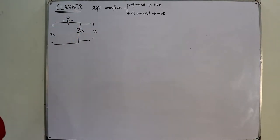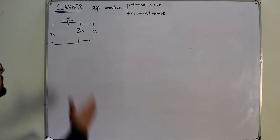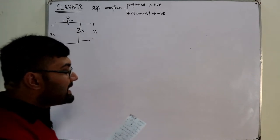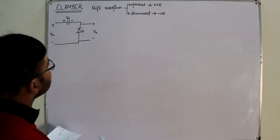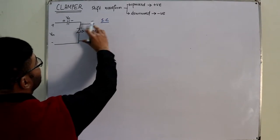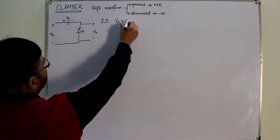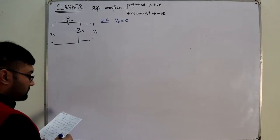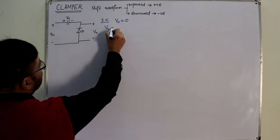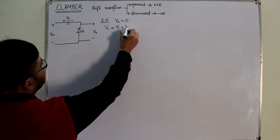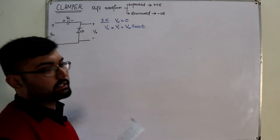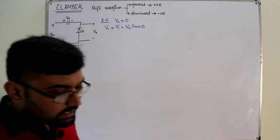Applying the short circuit test — you short the diode, find the current through it, and find the required parameters. So with the diode shorted, the output voltage is zero. First of all, the output voltage is zero. VC is directly equal to V input, which is a sinusoid: Vm sin(ωt). A sinusoid is a standard signal, that is why we discuss it.